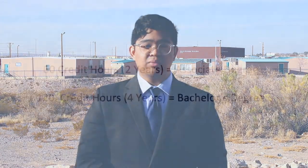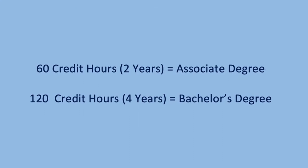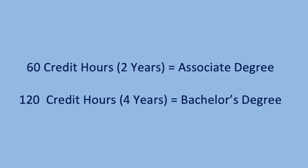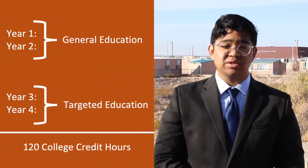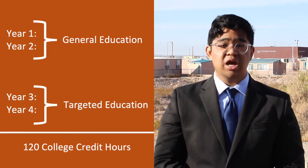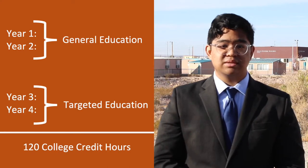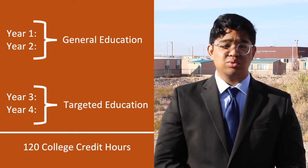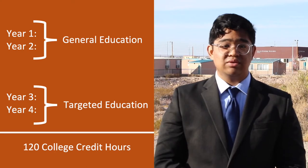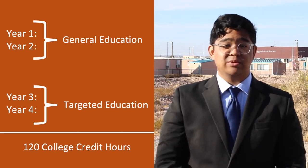This is where students take their introductory and core classes. Certain institutions may award an associate's degree when the student has reached 60 credit hours, or the first two years at UTEP. The last two years at UTEP is where students establish their major and work toward advanced and targeted courses. After 120 applicable college credit hours have been reached, the student will have received their bachelor's degree and be considered graduated.